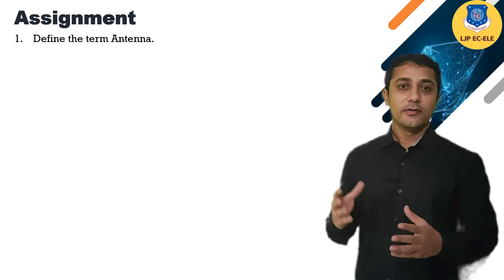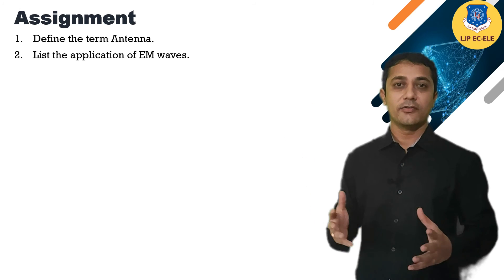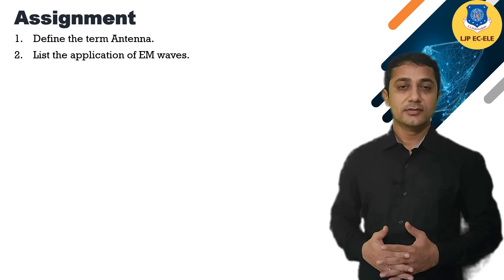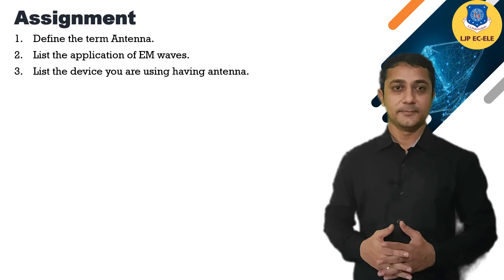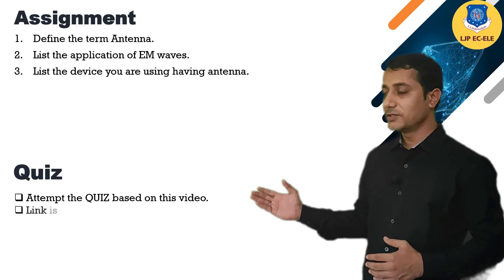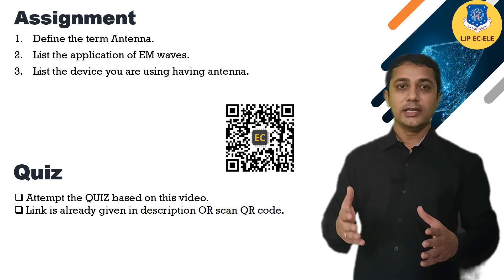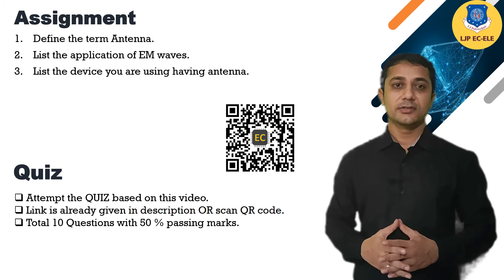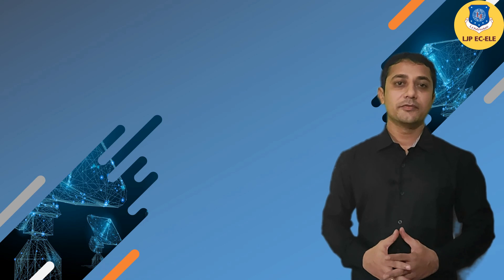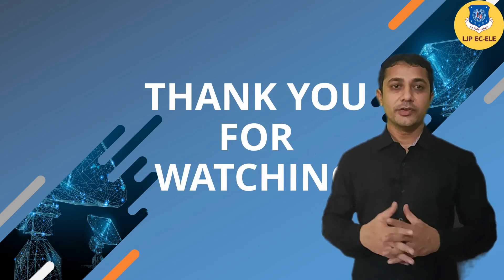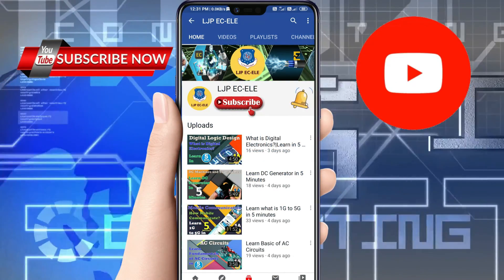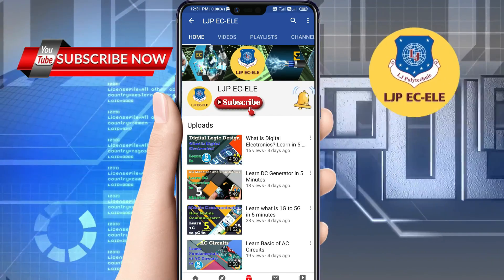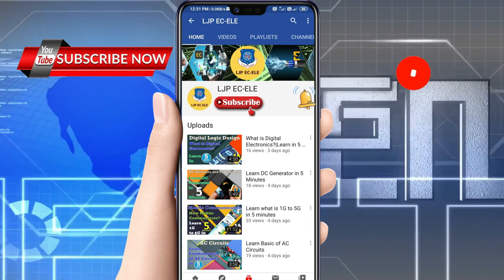At last, here is some assignment for you. First, what is the antenna. Then, list some various applications of EM generation — that is antenna applications. Also, list devices around you which have an antenna. You can also attempt the quiz based on this video by scanning the QR code or the link given in the description — total 10 questions with 50% passing marks. See you in the next video of antenna and wave propagation. If you like this video, please subscribe and like our YouTube channel LJPEC-ELE, and don't forget to click on the bell icon to get the latest video updates.